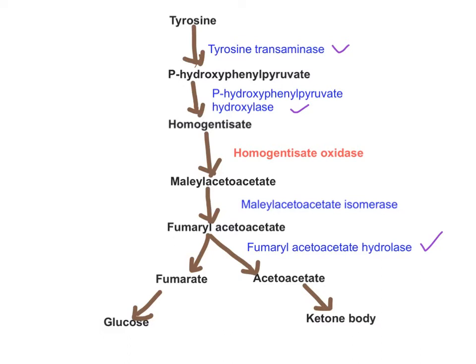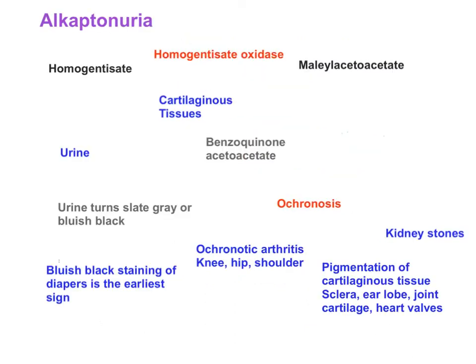Now let's focus on the enzyme that leads to alkaptonuria: homogentisate oxidase. This enzyme converts homogentisate into maleylacetoacetate. A deficiency or defect in this enzyme gives rise to alkaptonuria. Because of the decreased activity of homogentisate oxidase, there will be elevation of homogentisate in the blood and tissues. This elevation does not initially give rise to significant physical signs and symptoms.